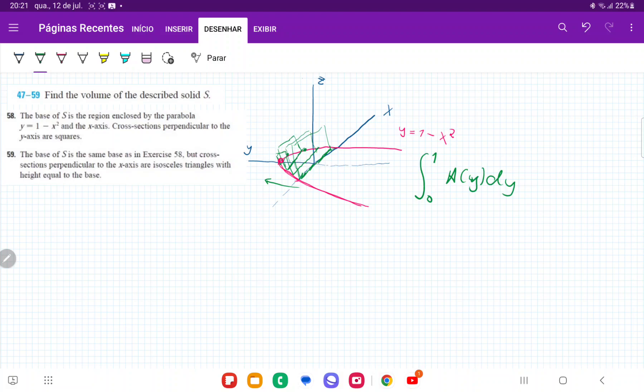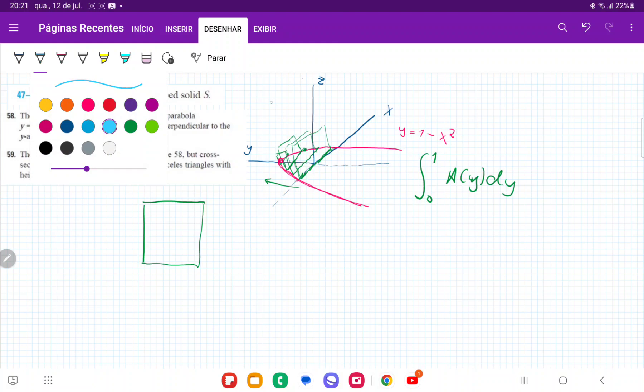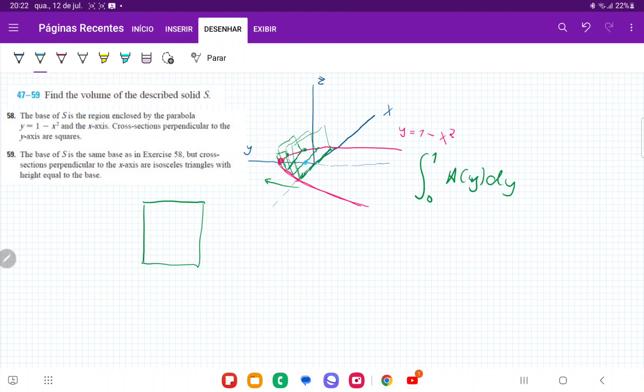Now, the area is just the base squared. And let's think about what the base is. So the base, and as we can see here, let me do it in a different color, the base is pretty much twice the height of that function. And the height of the function is 1 minus x squared. And we can see here that it's basically just twice that.